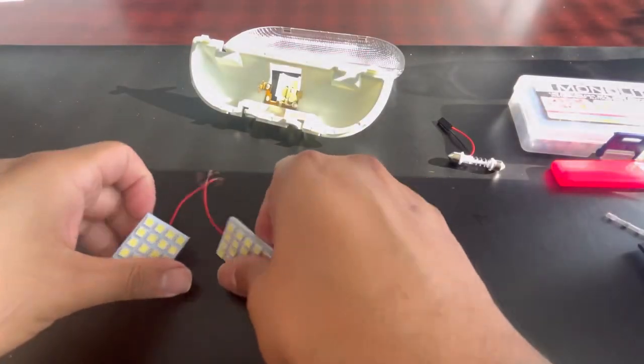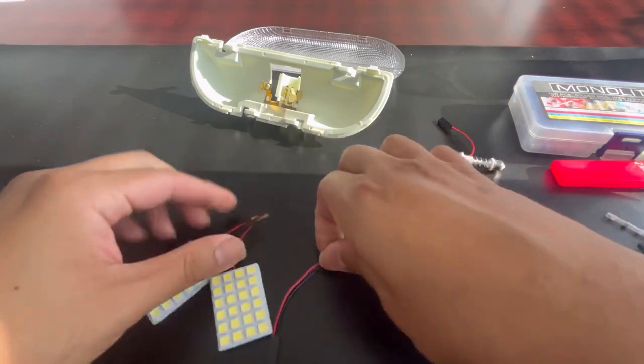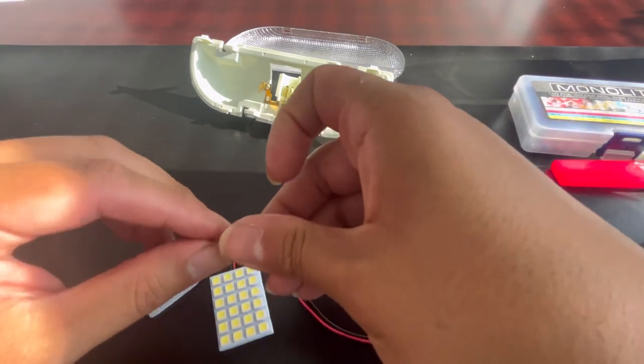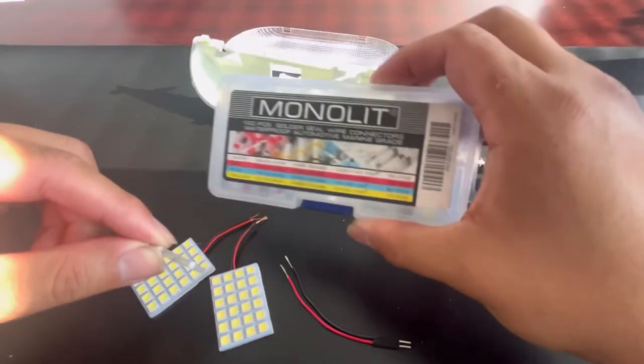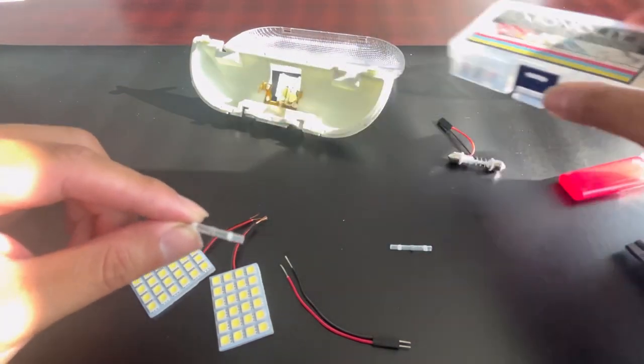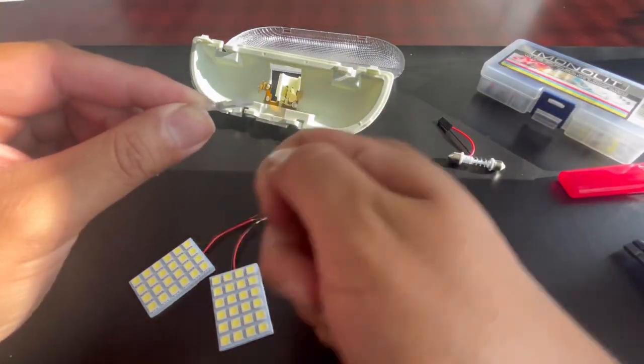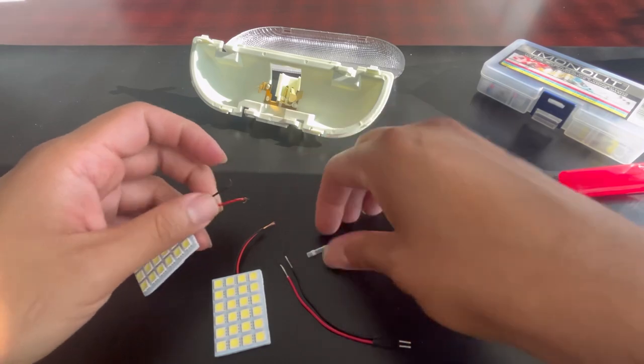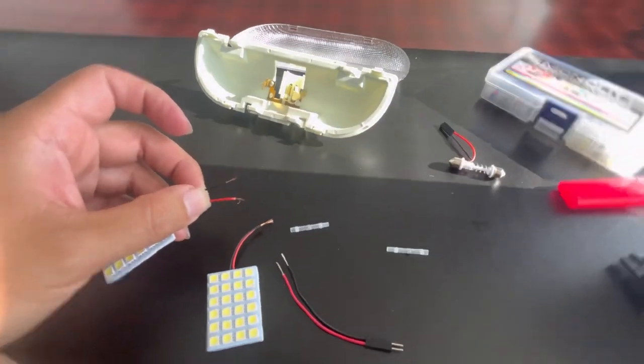Alright guys, so I ended up snipping the ends like I told you. What I'm going to be using is this right here - these are soldering seal wire connections. They have a little solder in the middle, so you have to heat it up and that'll give it a secure connection. Let me get that going and I'll show you guys.